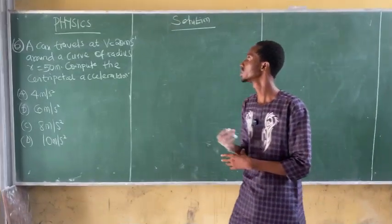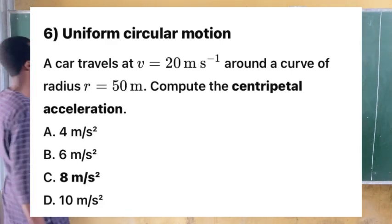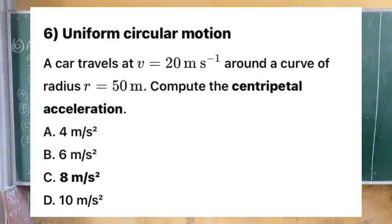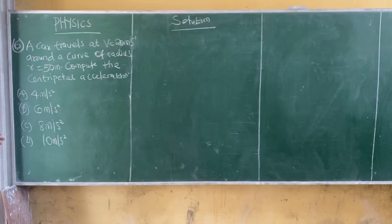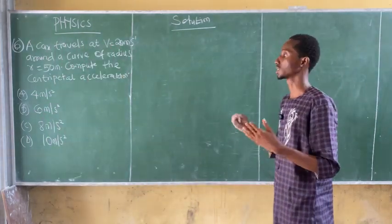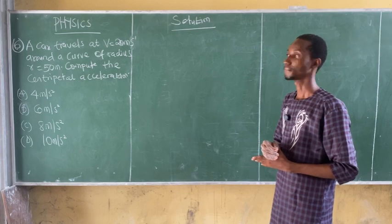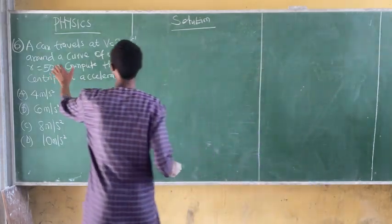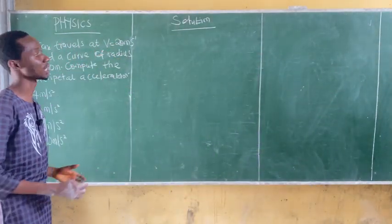Question 6: A car travels at a velocity of 20 meters per second around a curve of radius 50 meters. Compute the centripetal acceleration. Note that when a body moves in a circular path, the direction of the centripetal acceleration is towards the center. From the question, we are given the velocity, which is 20 meters per second.